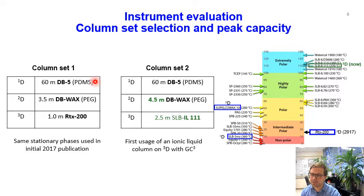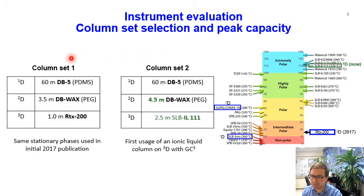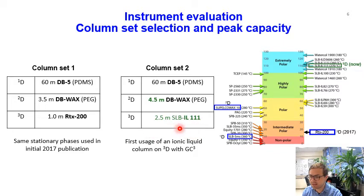Using this new instrument, we wanted to evaluate: A, what peak capacity we could obtain, and B, what kind of columns would allow us to use the full separation space. We decided to look at two column sets in particular. The first column set was very similar to that in the 2017 study, and column set two differed principally in the use of an ionic liquid column on the third dimension — that is, an SLB-IL-111 — therefore enabling us to use the full range of column polarities available with commercial capillary columns.